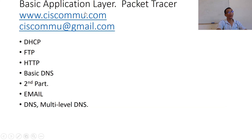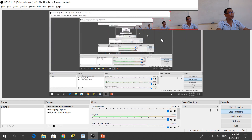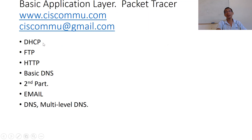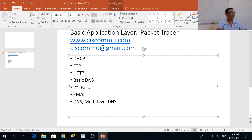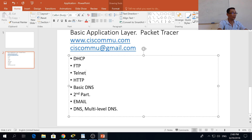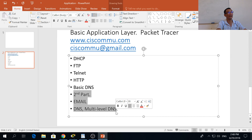Hello everybody. Today we're going to talk about basic application layer on Packet Tracer. We're going to cover website and email. I'm Chan from Cisco Academy MMU. We're going to divide the video into two parts. First we're going to talk about DHCP, FTP, HTTP, and basic DNS. We're also going to include Telnet as well. Then the second part we're going to talk about email and multi-level DNS, which is a bit more complicated.